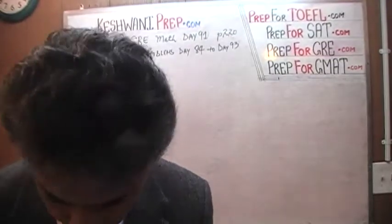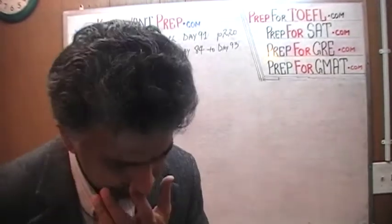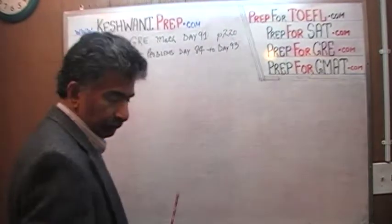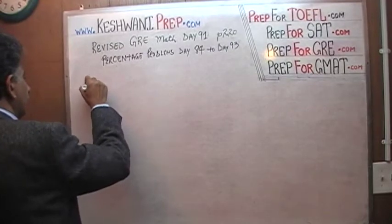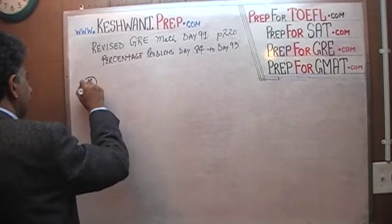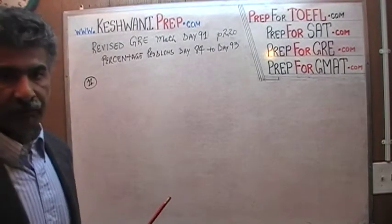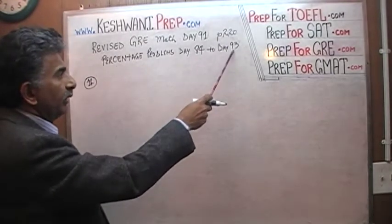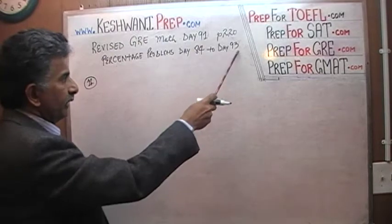The problem that we are about to solve is the one that you will find on page number 220, question number 12. This is percentage problems and we have been doing percentage problems since day number 84. We are going to go all the way up to day 93 — those 10 days from day 84 to day 93.